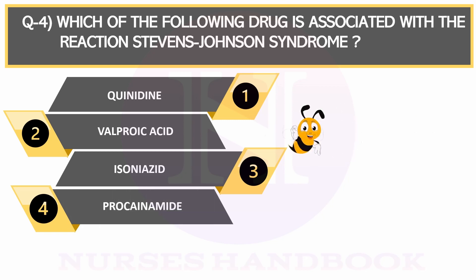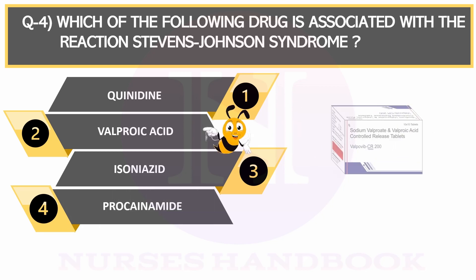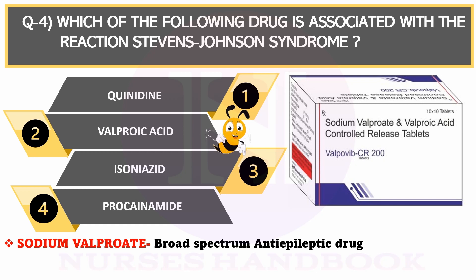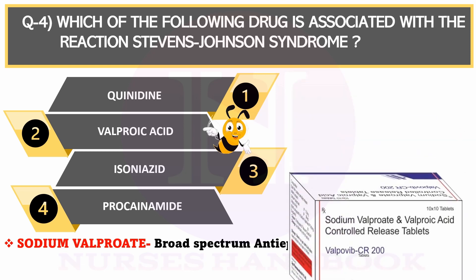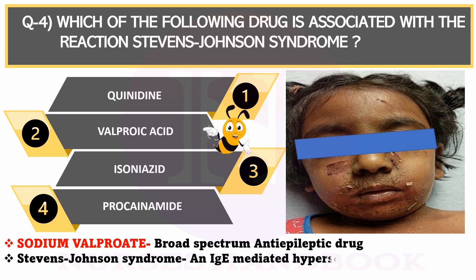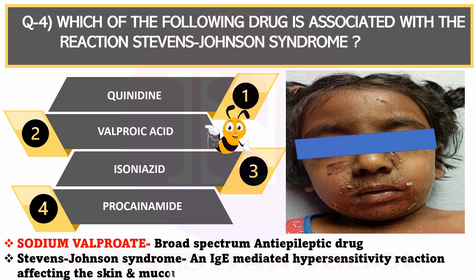The correct answer is valproic acid. Sodium valproate is a broad-spectrum anti-epileptic drug used when the exact seizure classification is unknown or multiple seizure types exist. In some cases, sodium valproate causes a reaction known as Stevens-Johnson syndrome, which is a life-threatening, IgE-mediated hypersensitivity reaction affecting the skin and mucous membrane.